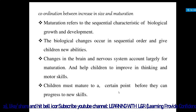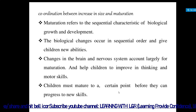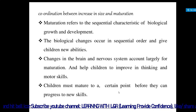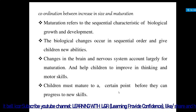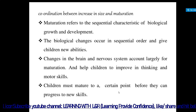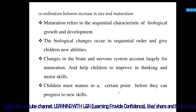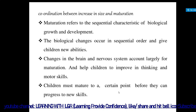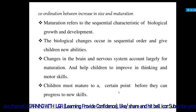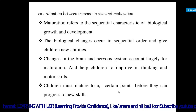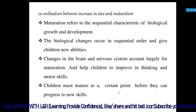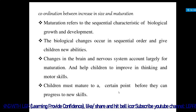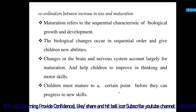Maturation refers to the sequential characteristics of biological growth and development. Biological changes occur in sequential order and give children new abilities. The brain develops anatomically according to anatomy, but with the help of experience, environment, the genetic factors of the parents, and other conditions, it fully affects the child's growth and development. Changes in the brain and nervous system account largely for maturation and help children improve in thinking and motor skills.